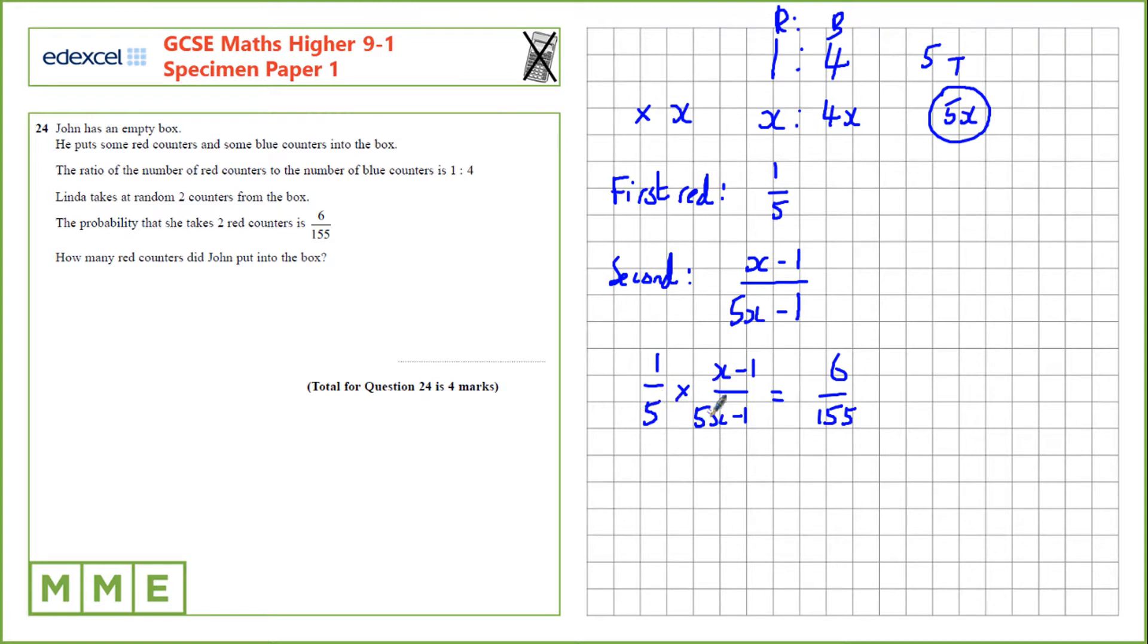Now, let's multiply by 5 here. So we should get x minus 1 over 25x minus 1 is 6 over 155.